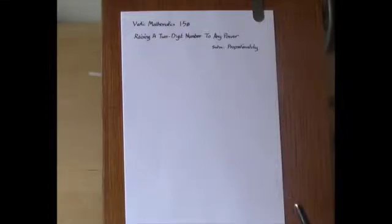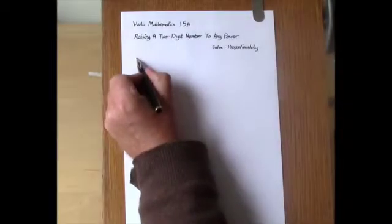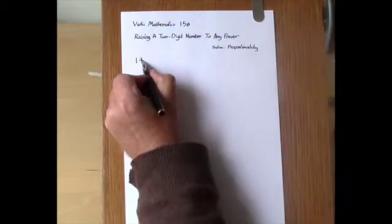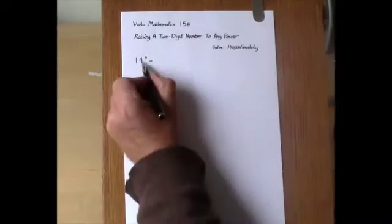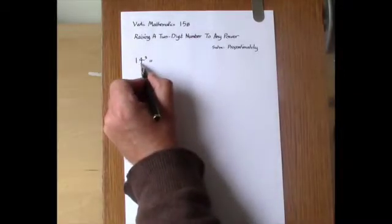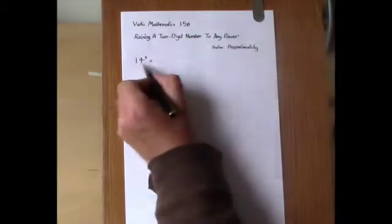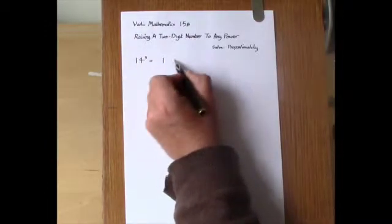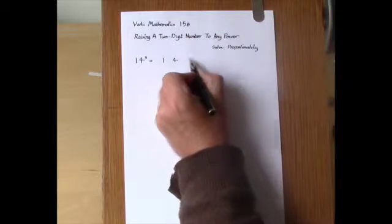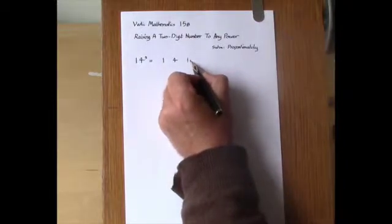In the 15th session I showed how to raise a two-digit number to the power of 3, that is cubing a number like 14. This required setting down a geometric sequence using the ratio of the two numbers 1 to 4. In this case we put down 1 cubed and then we use the ratio 1 to 4 and put down the next three terms of the sequence like so.